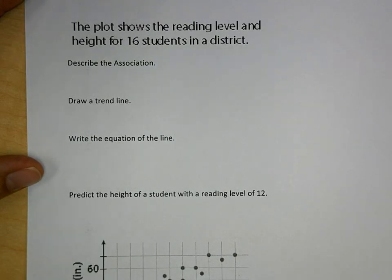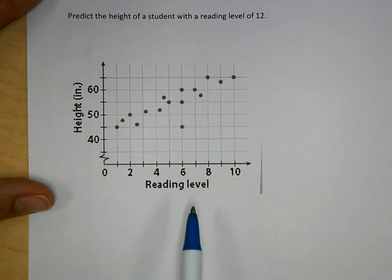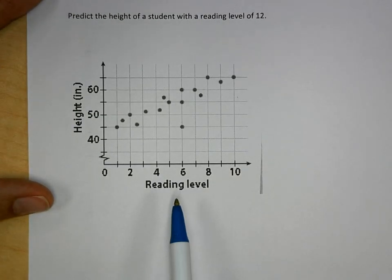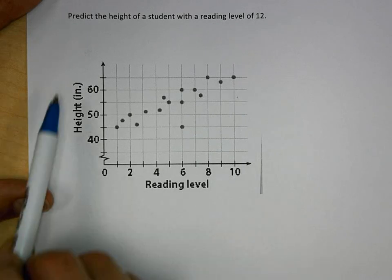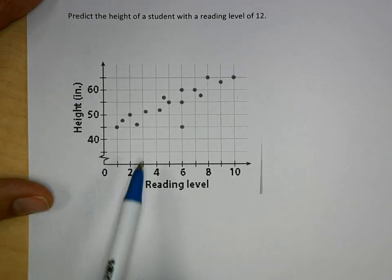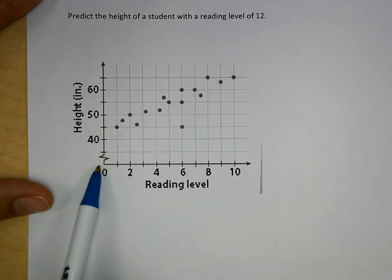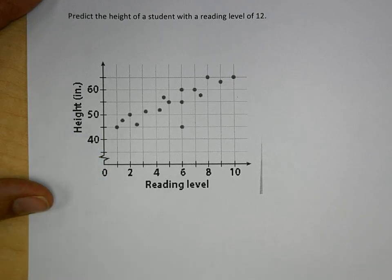Here's an example. The plot shows the reading level and height for 16 students in a district. Reading level and height — notice the break on the y-axis, which means they're skipping from 0 to 35 inches.